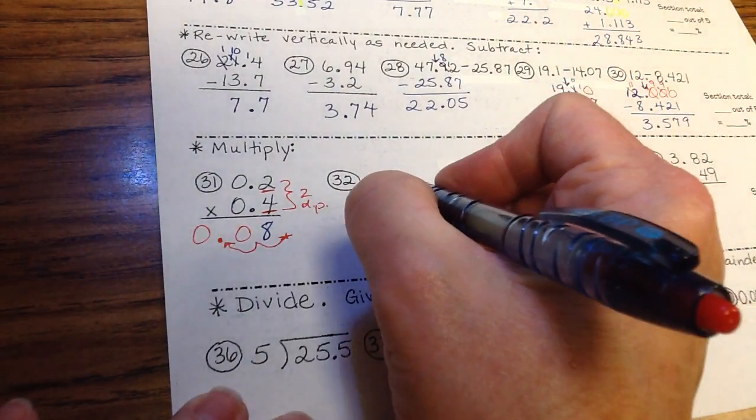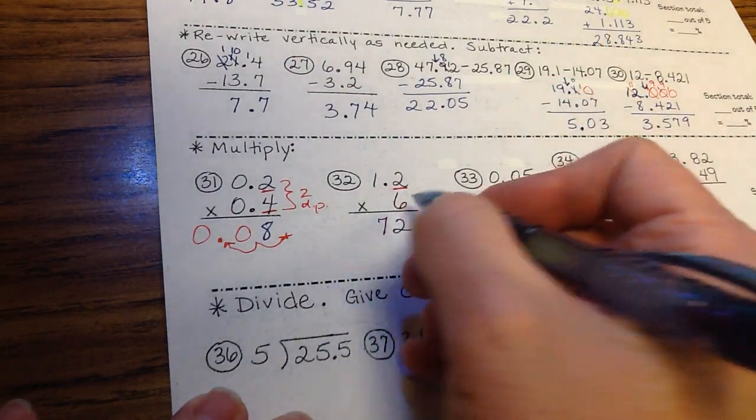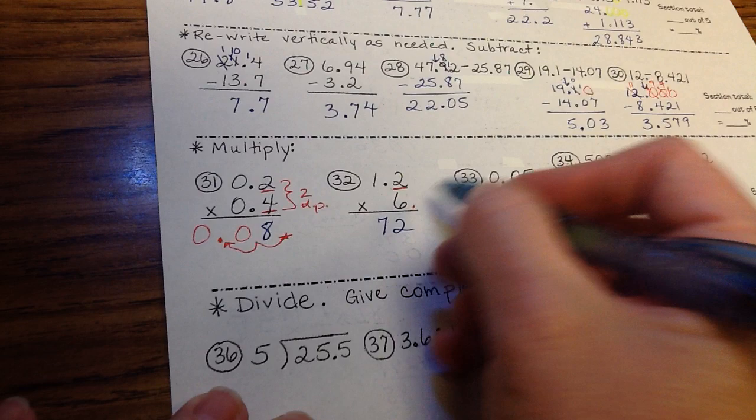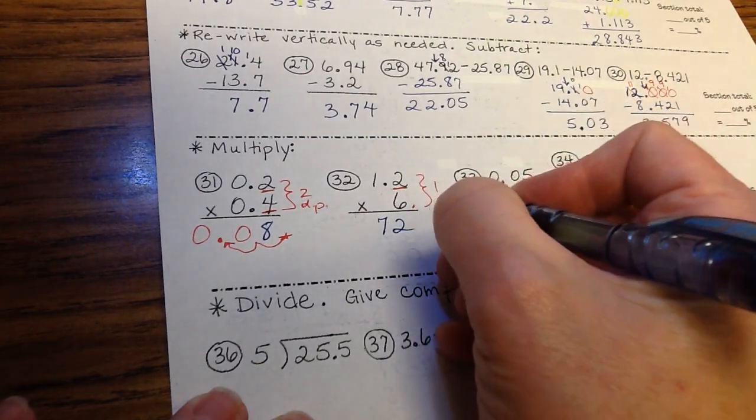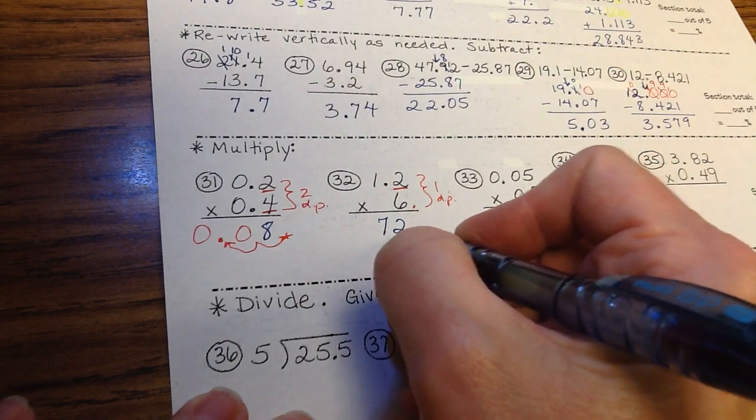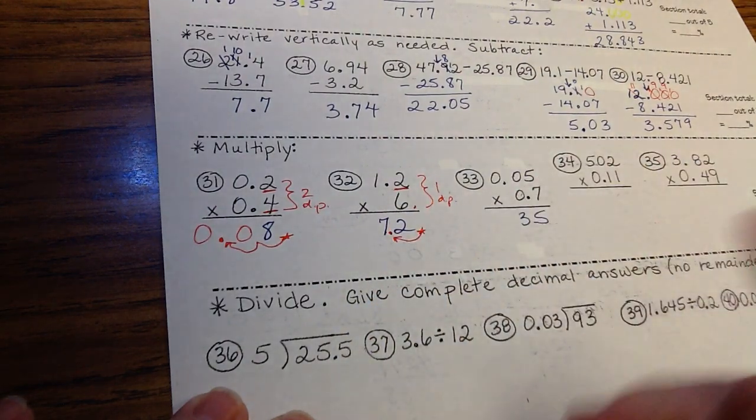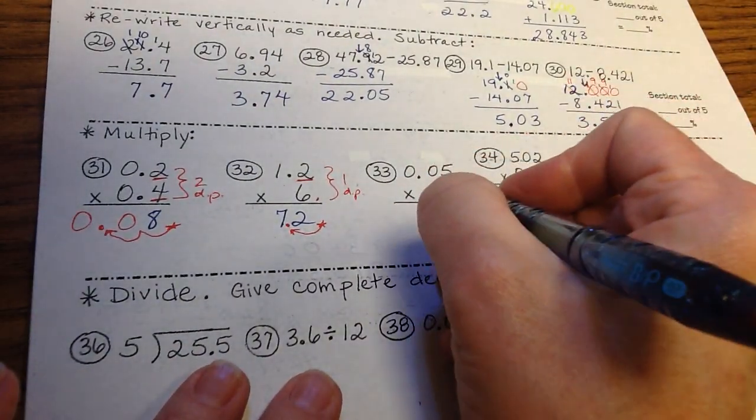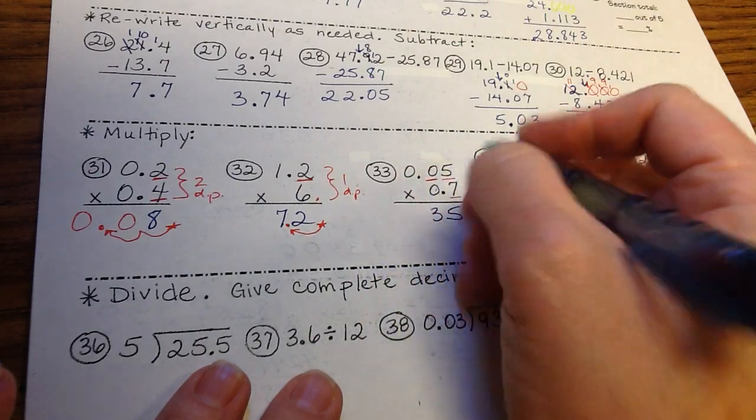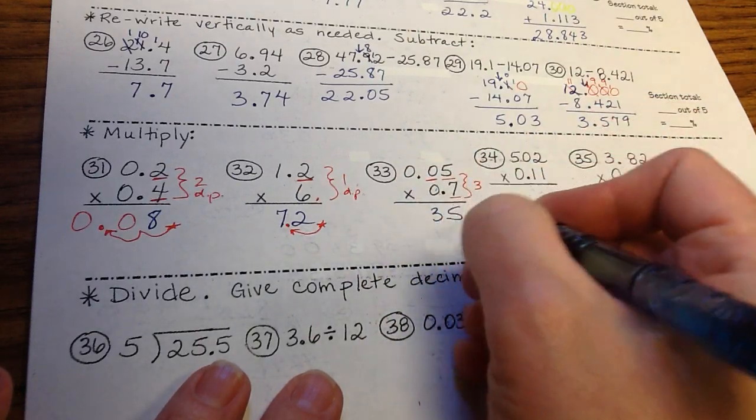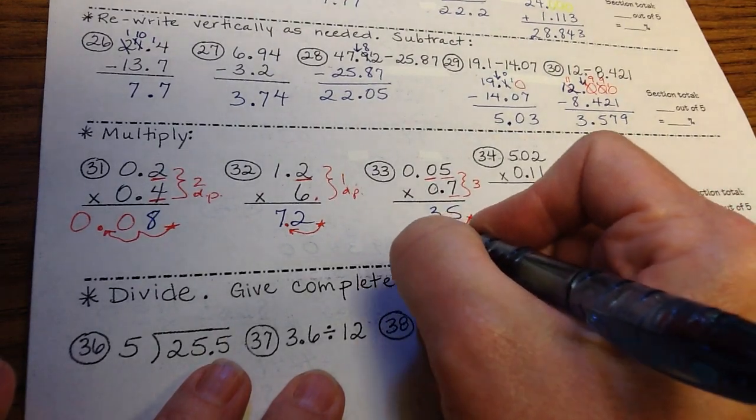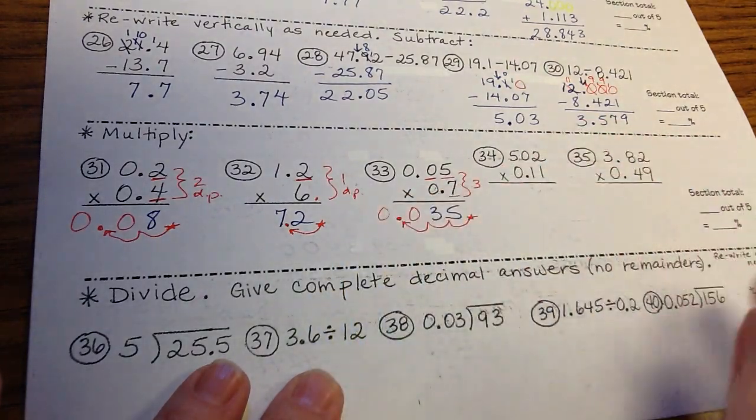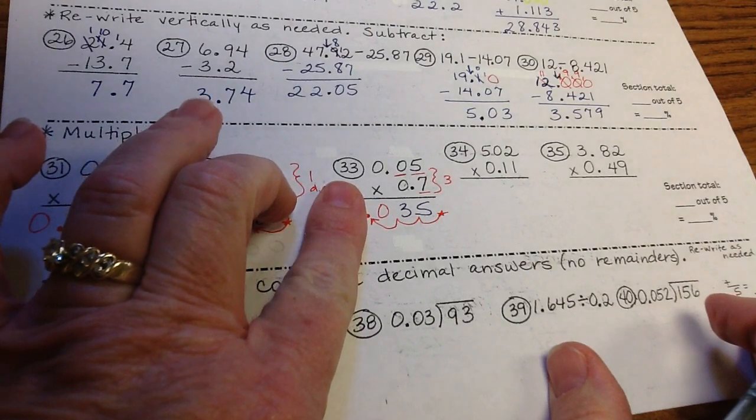Number 32 only has 1 decimal place, because if a number has no decimal, the decimal goes behind the number, and that means it would have no decimal places. So here we can see that this is 1 decimal place. Make the answer have the same total decimal places. 7.2. That's it. For number 33, we've got the 5, the 7, and this 0. 3 decimal places. So we have to make sure that the answer has 3 decimal places. We start at the back, move over 1, 2, 3 times. We have one extra space, so we fill in with a 0. And you can put an extra 0 in front if you want. 0.035 is required.